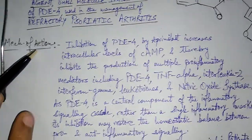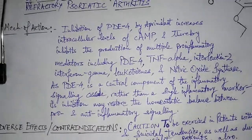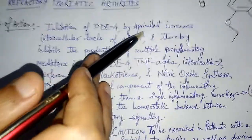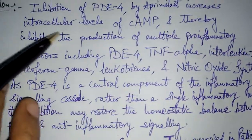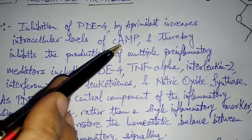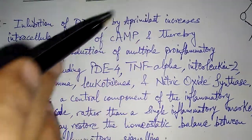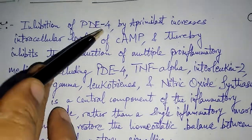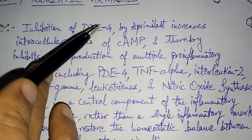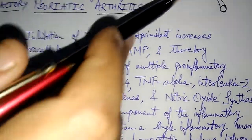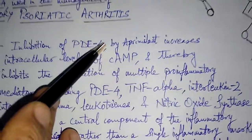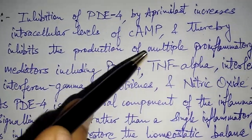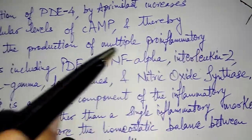Regarding the mechanism of action: inhibition of PDE4 by Apremilast increases intracellular levels of cyclic AMP. The drug inhibits PDE4, which is the enzyme responsible for degradation of cyclic AMP. Once this enzyme is inhibited, no more PDE4 is available to degrade cyclic AMP, thereby inhibiting the production of multiple pro-inflammatory mediators.